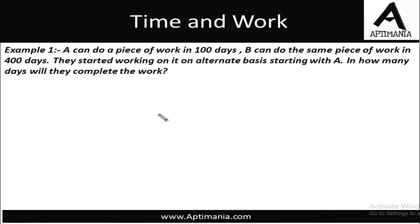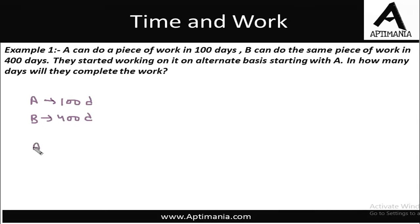Here is the first example: A can do a piece of work in 100 days and B can do the same piece of work in 400 days. They started working on an alternate basis starting with A. That means on the first day A comes to do the work, on the second day B will come, then on the third day A, then on the fourth day B, and so on. So in how many days will the work be completed? We will stick to our original method — the LCM method.